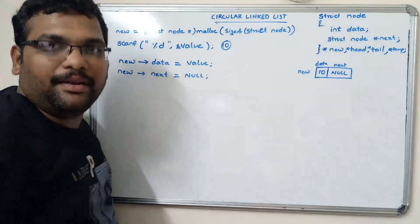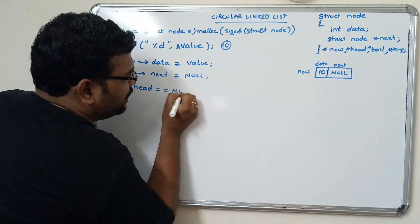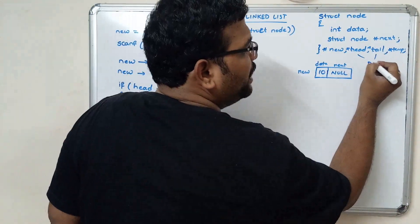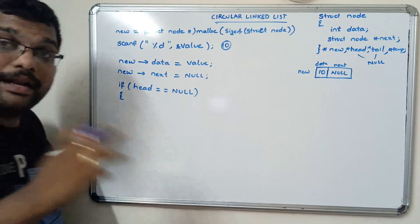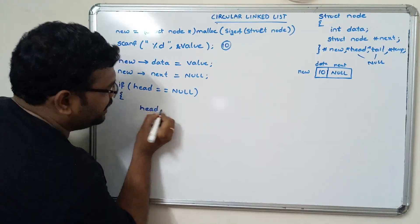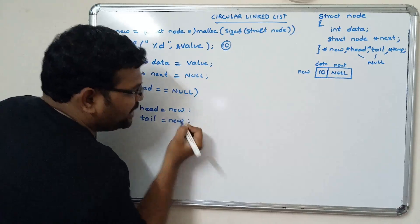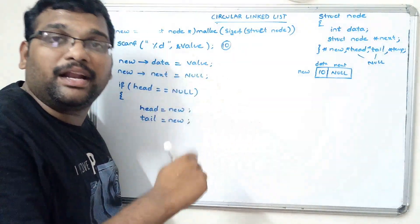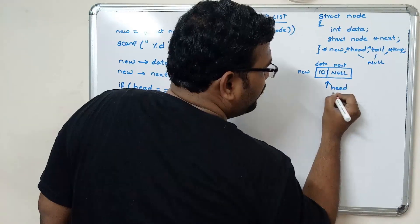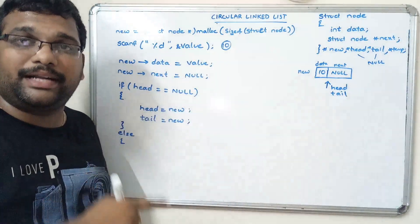Now we check: if head == NULL, then head = new and tail = new, because only one element exists, so both head and tail point to that element.